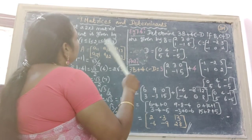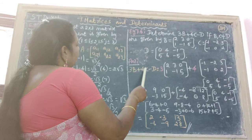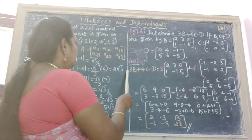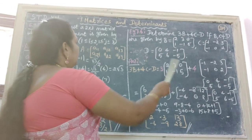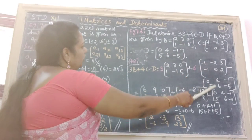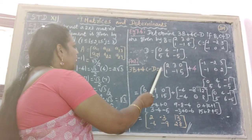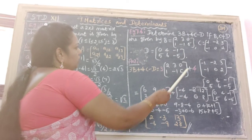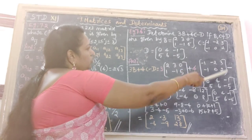The answer is to find the value of 3B plus 4C minus D. Then substitute 3 into B value plus 4 into C value minus D. Substitute the D value.